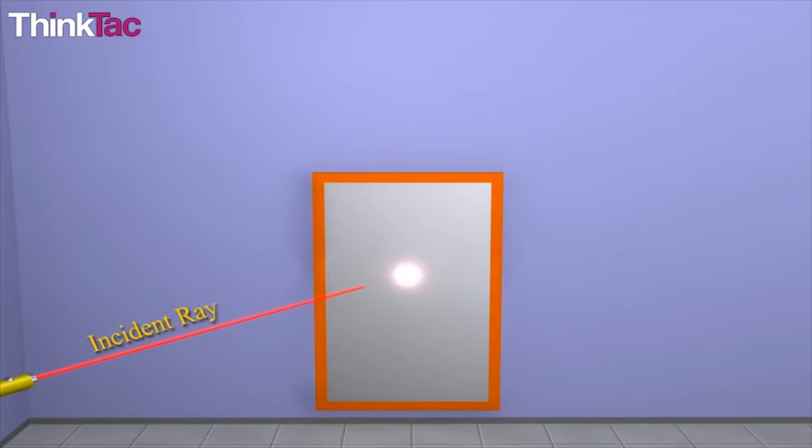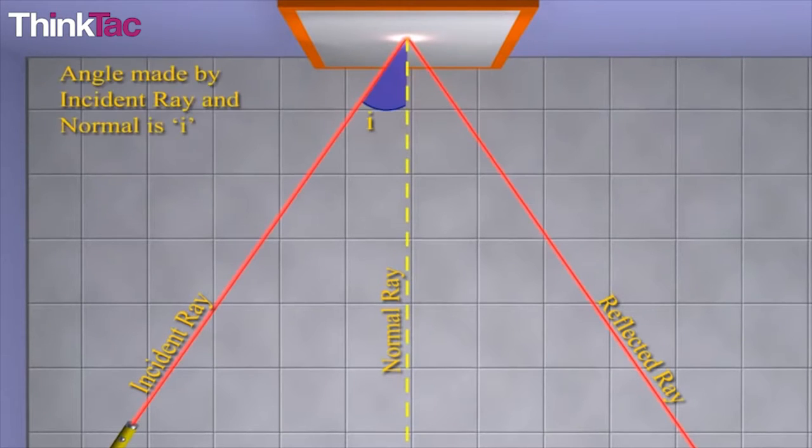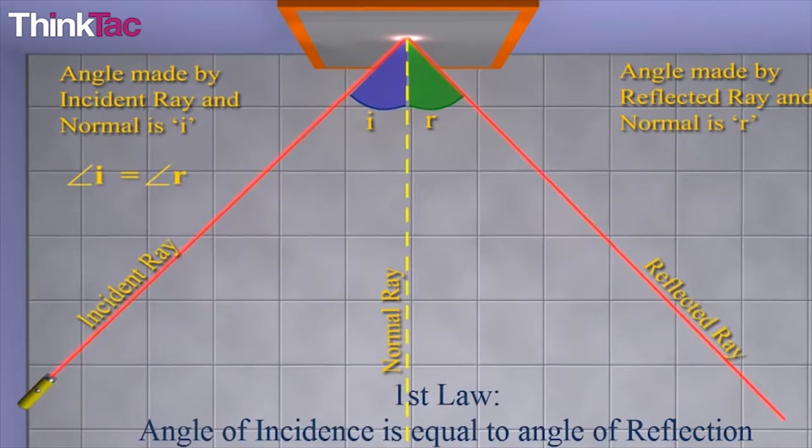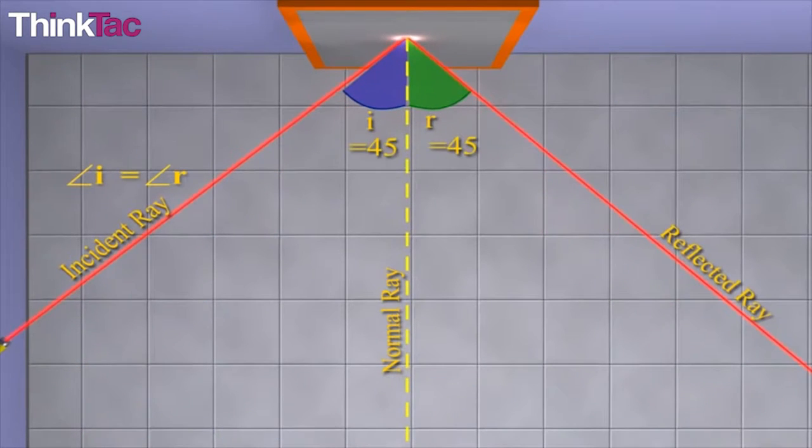Reflection is the phenomenon of a wave being thrown back from a surface. The law of reflection states that the angle of reflection equals the angle of incidence. Angles are measured relative to the perpendicular at the point where the light hits the surface.